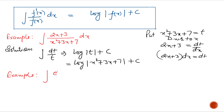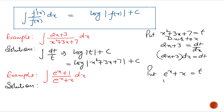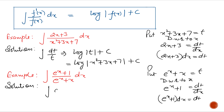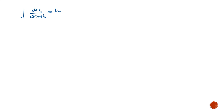Example 2: integrate (eˣ + 1) divided by (eˣ + x) with respect to x. The derivative is present in the numerator, so put denominator = t. Differentiating gives eˣ + 1 = dt/dx, so (eˣ + 1)dx = dt. We get dt/t, and the integration is log|t| + c. Replace t by eˣ + x, so the answer is log|eˣ + x| + c. For integration of dx/(ax + b), the result is log|ax + b| / a + c. For integration of (ax + b)ⁿ, the answer is (ax + b)^(n+1) / [(n+1)·a] + c.